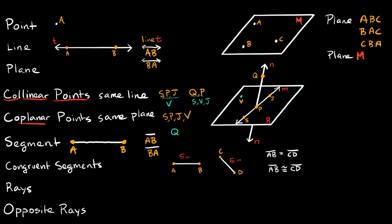Now let's talk about rays. Rays are basically the love child of segments and lines — they're half segment and half line. A ray has an endpoint on one side but extends as a line in the other direction. So if these were labeled A and B, the way you would write this is ray AB — it has its own symbol, just a straight arrow in one direction. Rays are the only one where the order of the letters matters. If you put ray BA, that would be incorrect, because you always want to write the endpoint first. Since the endpoint here is A, that's why we put A first.